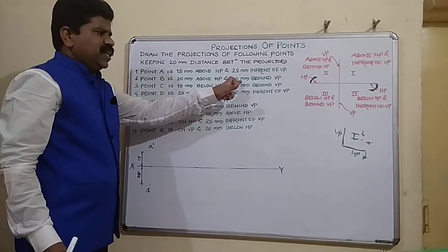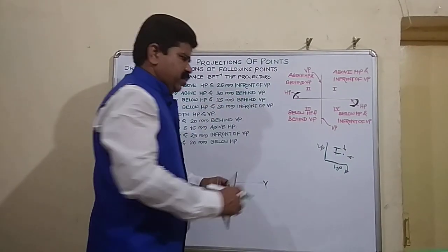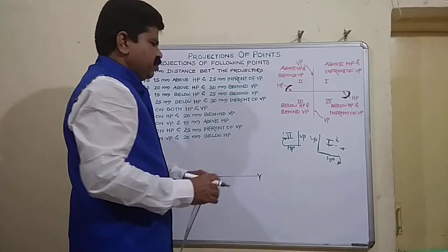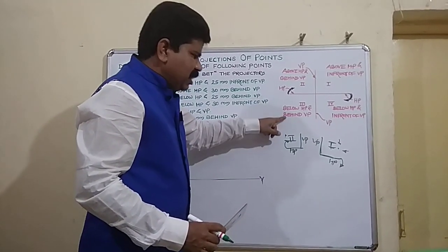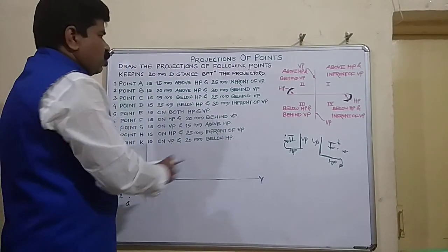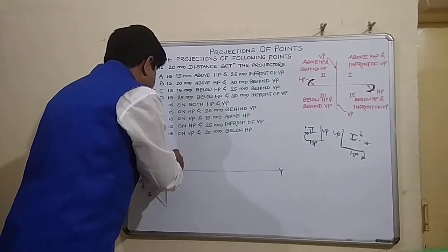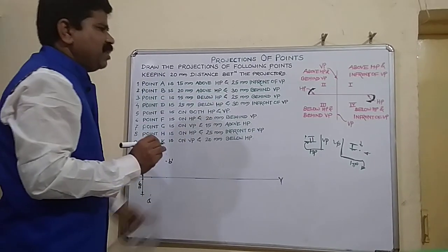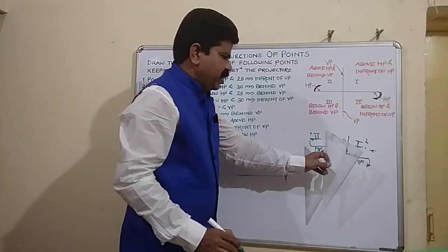Point B is 20 mm above HP and 30 mm behind VP. Position is above HP and behind VP, which belongs to the second quadrant. The front view develops on the vertical plane and the top view develops on HP, but as HP is rotated clockwise 90 degrees, both views will go above XY. So 20 above XY gives B dash, and 30 behind VP also goes above XY giving point B. Both B and B dash are above XY.